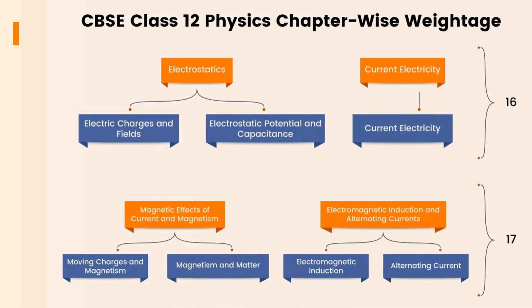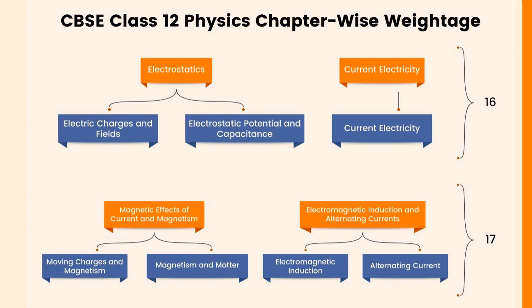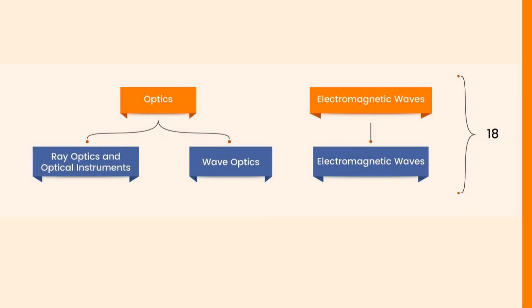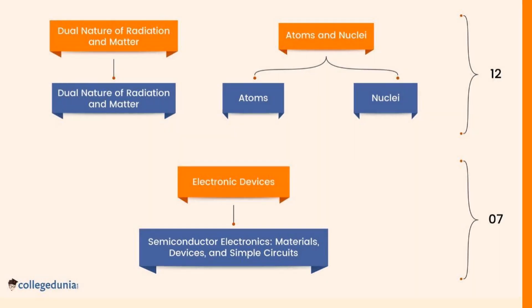Let's check the Class 12 Physics chapter-wise weightage. The units of Electrostatics and Current Electricity carry 16 marks. Units Magnetic Effects of Current and Magnetism, and Electromagnetic Induction and Alternating Current together carry 17 marks. Electromagnetic Waves and Optics carry 18 marks. Dual Nature of Radiation and Matter along with Atoms and Nuclei carries 12 marks, and Electronic Devices is for 7 marks.